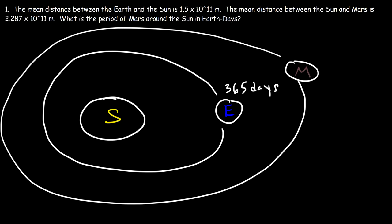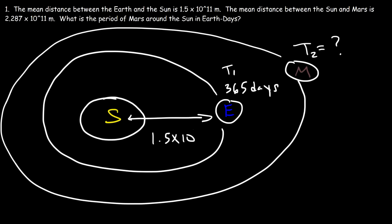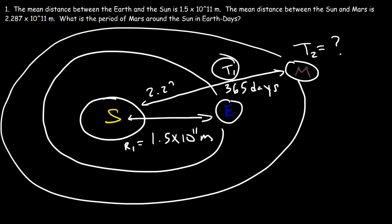Let T₁ = 365 days correspond to Earth, and T₂ is what we want to find — the time it takes Mars to orbit the Sun. R₁ = 1.5×10¹¹ m is the Earth-Sun distance, and R₂ = 2.287×10¹¹ m is the Sun-Mars distance. Our goal is to calculate T₂.